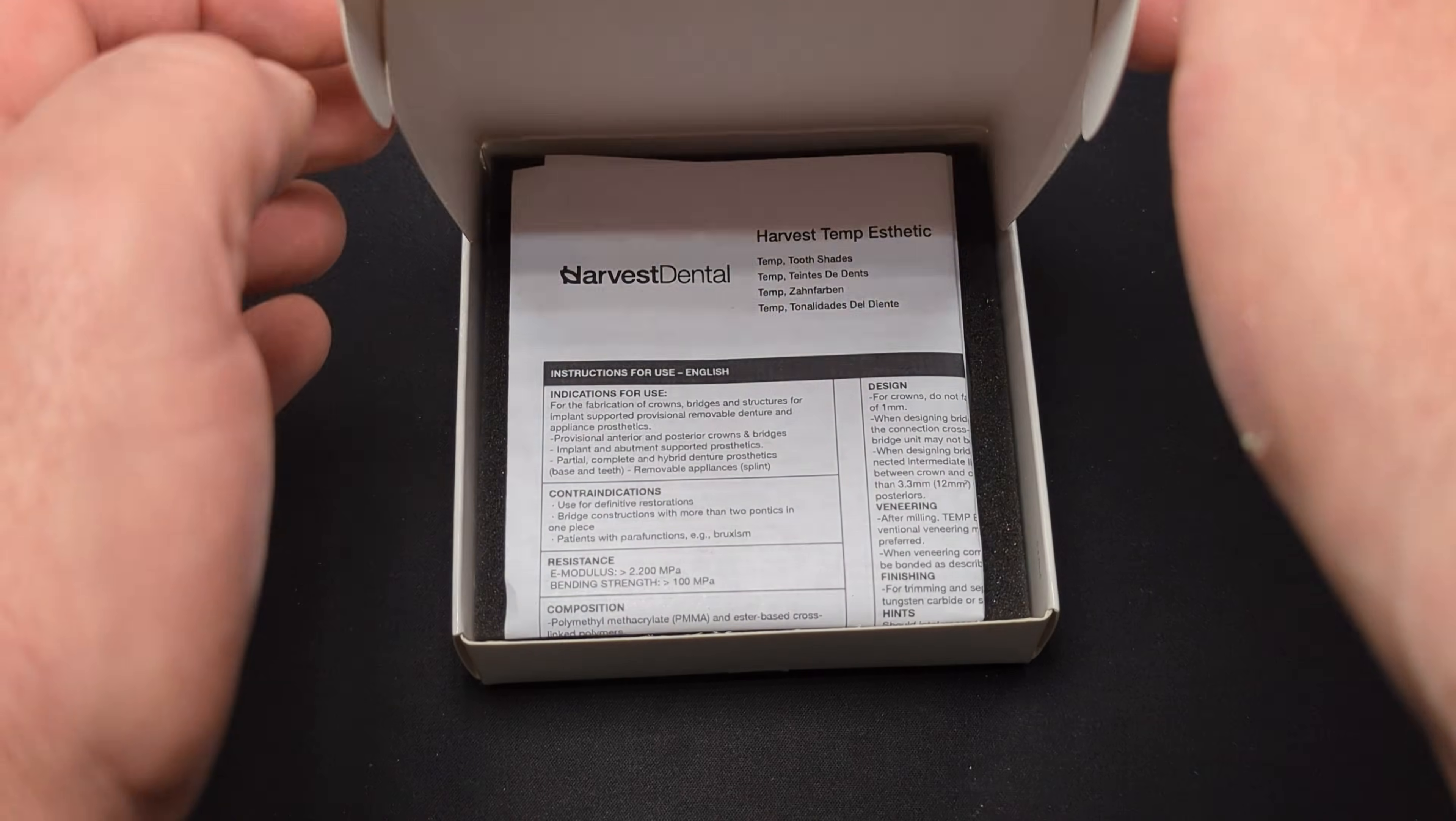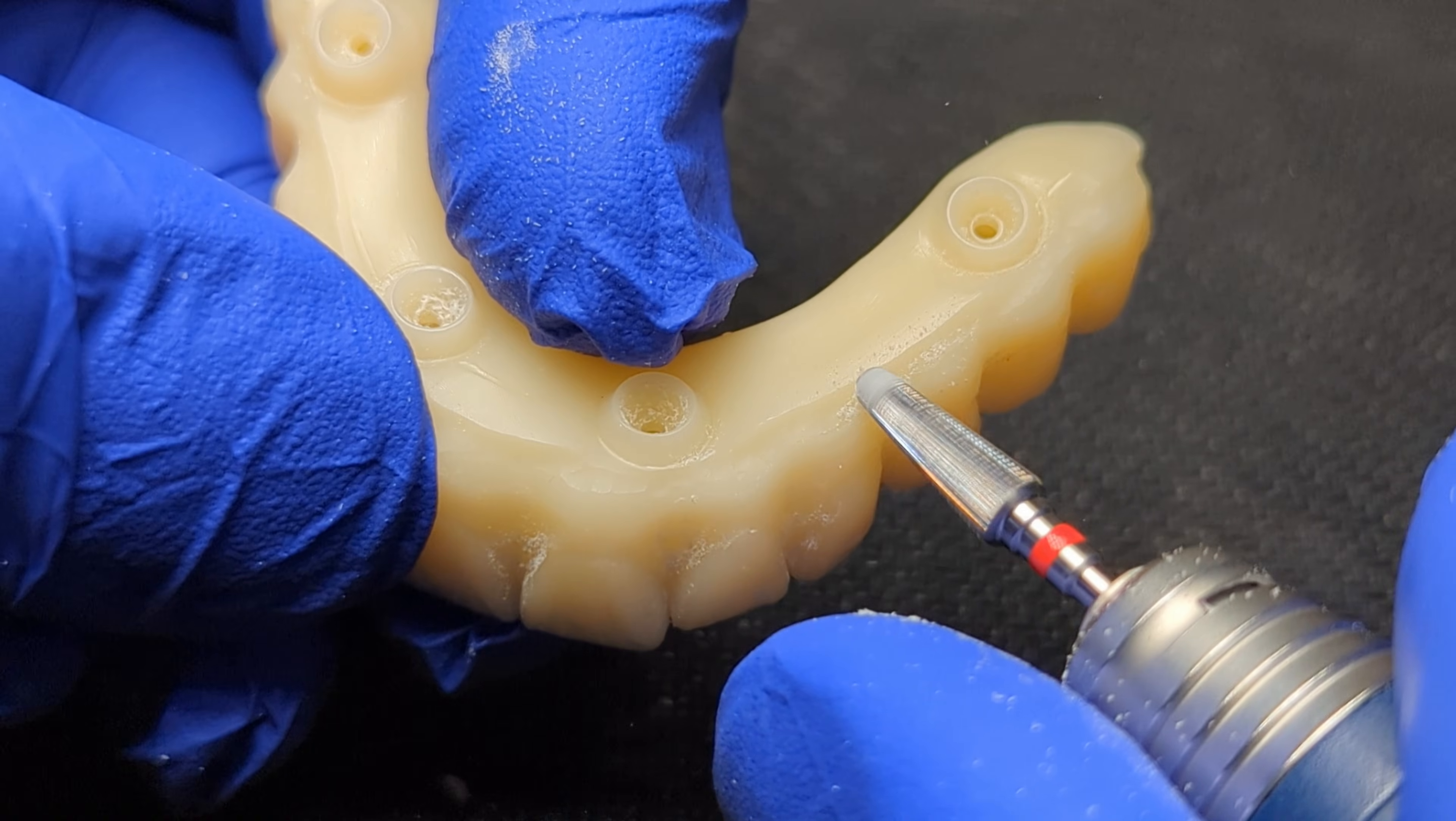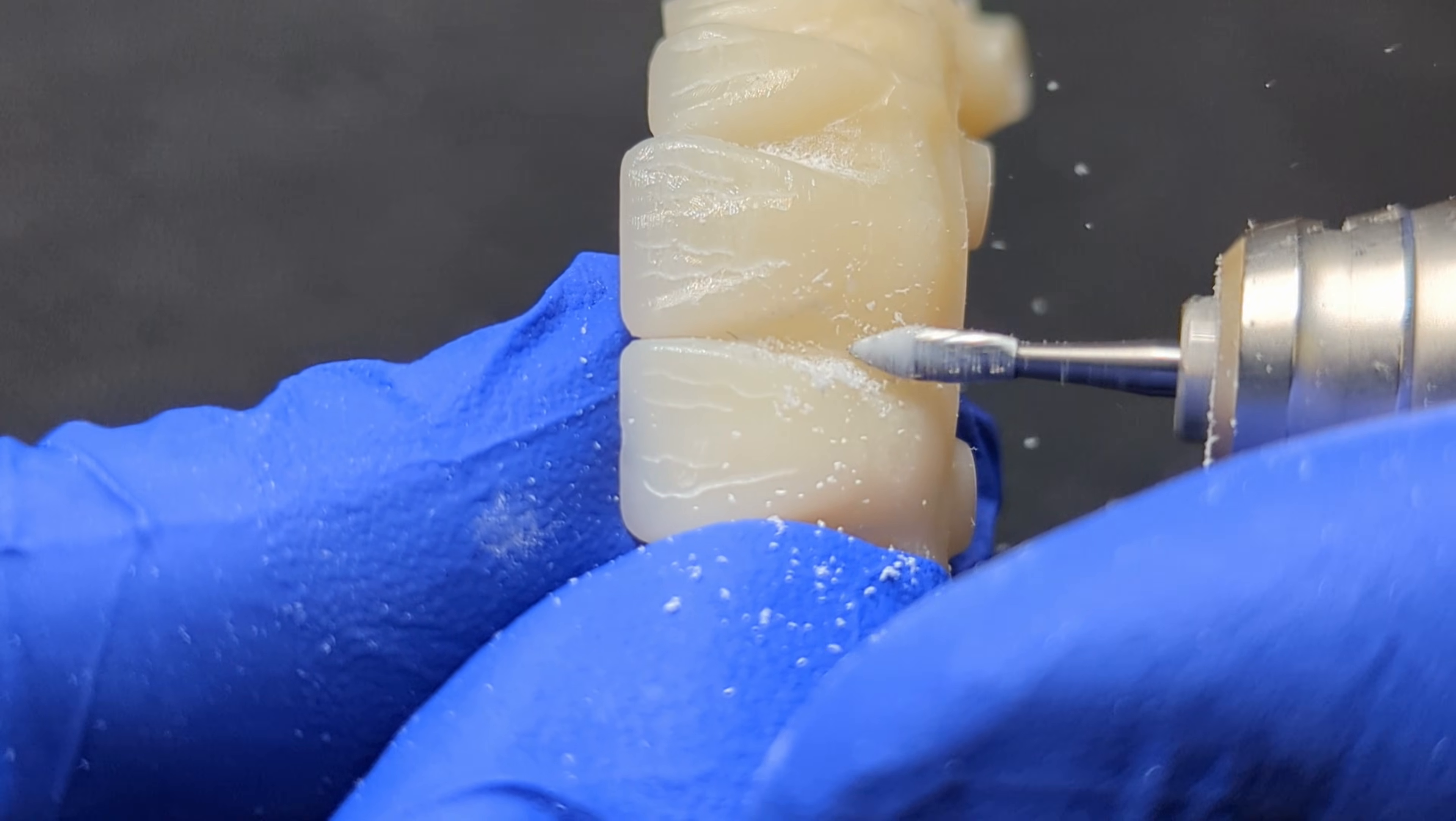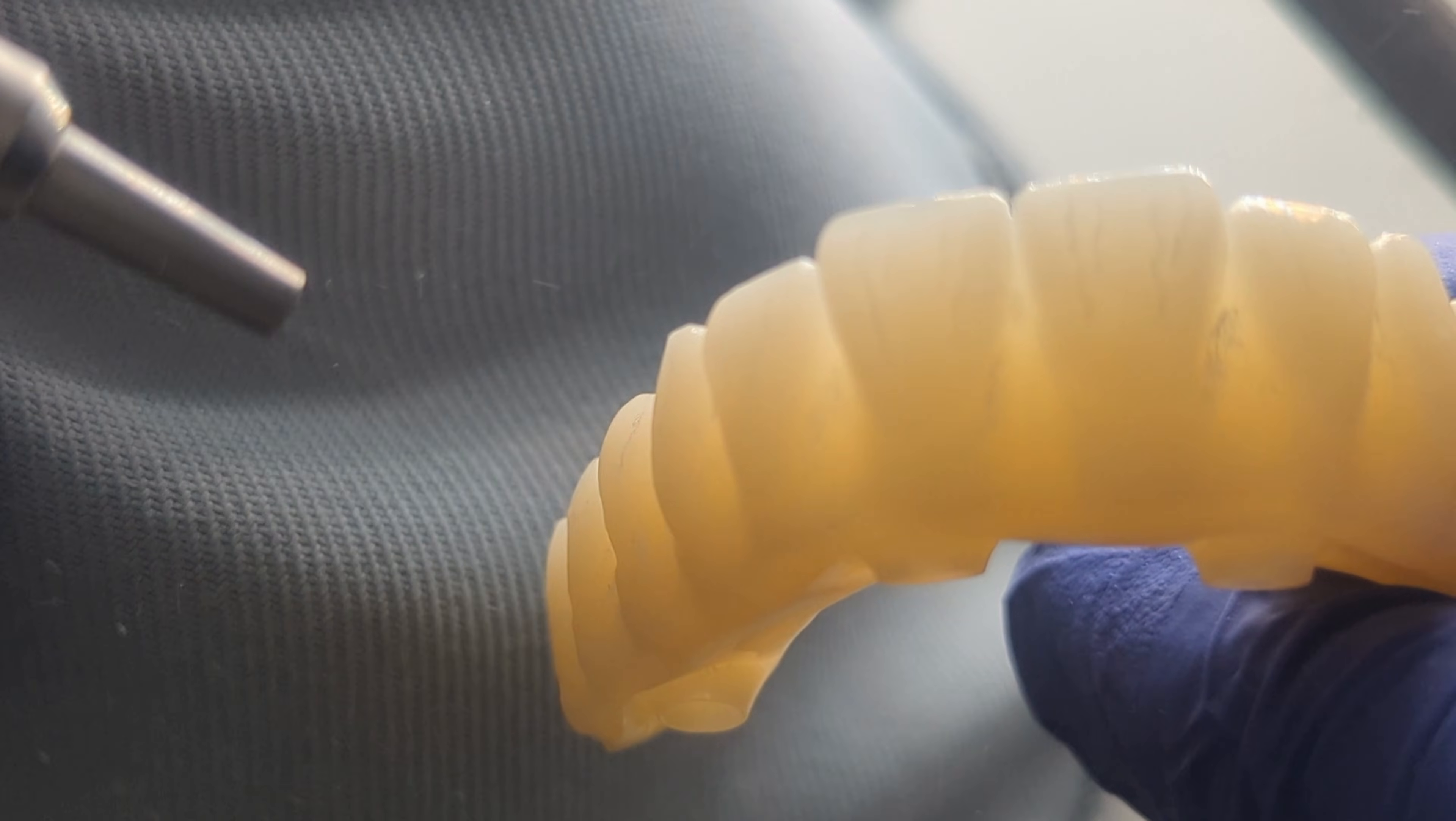The next step is optional. For a two-hour all-on-four, I could print the prosthesis, but I prefer the look and fit of the milled version. Using carbide burs, I prepare the PMMA for the PIC application. I open the embrasures and thin out the neck areas. I also sandblast the entire appliance with aluminum oxide.